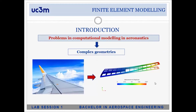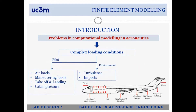What kind of complexities arise when we're talking about space structures? Sometimes we have complex geometries. As you can see in the slides, the wing section is not a simple structure — it has a bunch of different components: different beams, different stringers, different ribs.